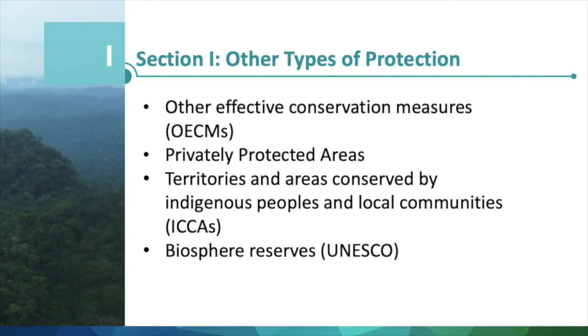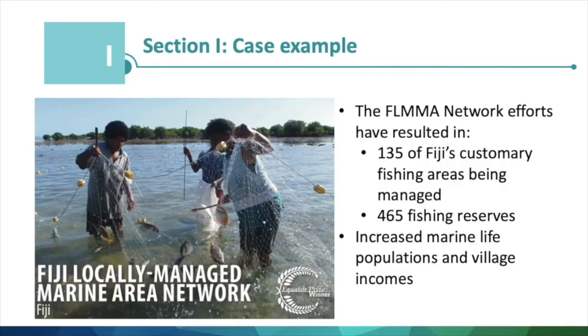This is informed by the ICCA registry. Finally, we also pull in, where available, biosphere reserves from UNESCO. The dossiers will also aim to include some case examples of other types of protection and local action. As an example for Fiji, the Fiji locally managed marine area network efforts have resulted in 135 of Fiji's customary fishing areas being managed and about 465 fishing reserves. As a result of the LMMA network and protection measures, marine life populations have rebounded and village incomes have risen significantly with increased harvests.